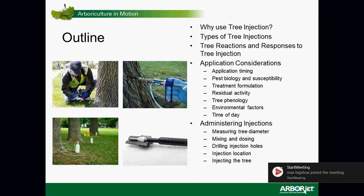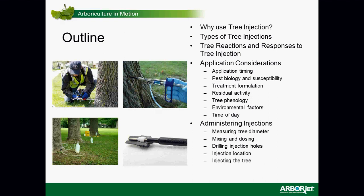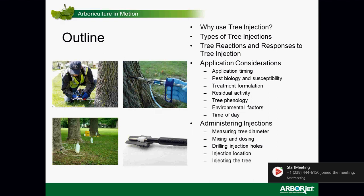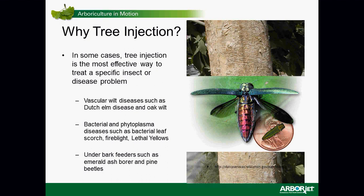We'll speak about the injection location — where to inject trees — and the actual process of injecting the tree. So why tree injection? In some cases, tree injection is the most effective way to treat a specific insect or disease problem. Think about vascular wilt diseases such as Dutch elm disease — they are internal to the tree and move rapidly within the tree system.